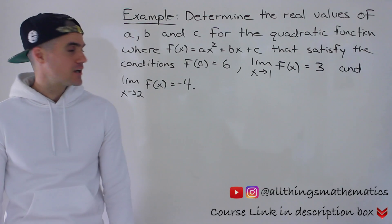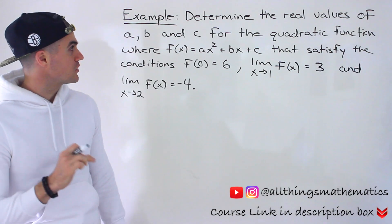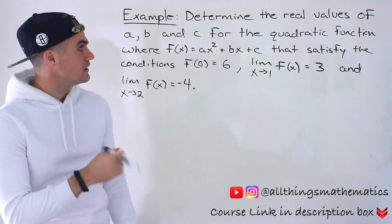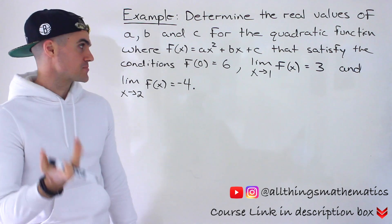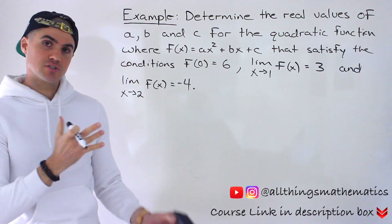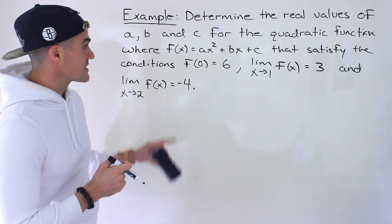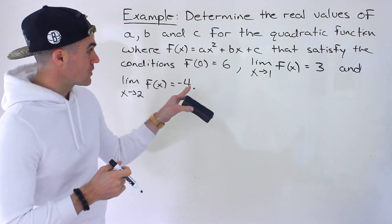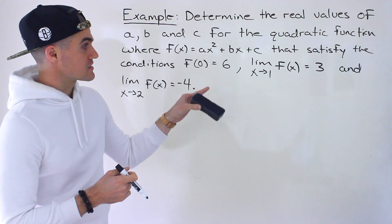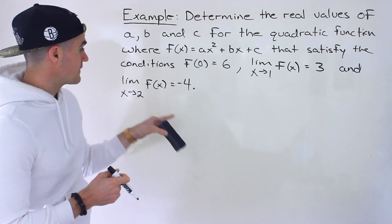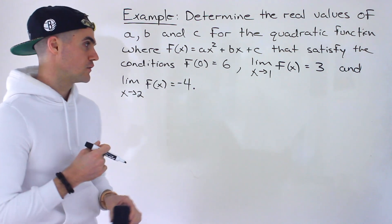Welcome back. Patrick here. Moving on to the next example. We have to determine the real values of a, b, and c for the quadratic function where f of x is equal to ax squared plus bx plus c. It satisfies these conditions: f of 0 is equal to 6, the limit as x approaches 1 of f of x is equal to 3, and the limit as x approaches 2 of f of x is equal to negative 4.